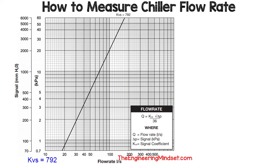Now we can calculate the flow rate. To do this we first need to know the KVS value, which is set by the manufacturer of the orifice plate. The KVS value will vary between manufacturers, model numbers, and also the size of the orifice plate, so make sure you use the correct value.